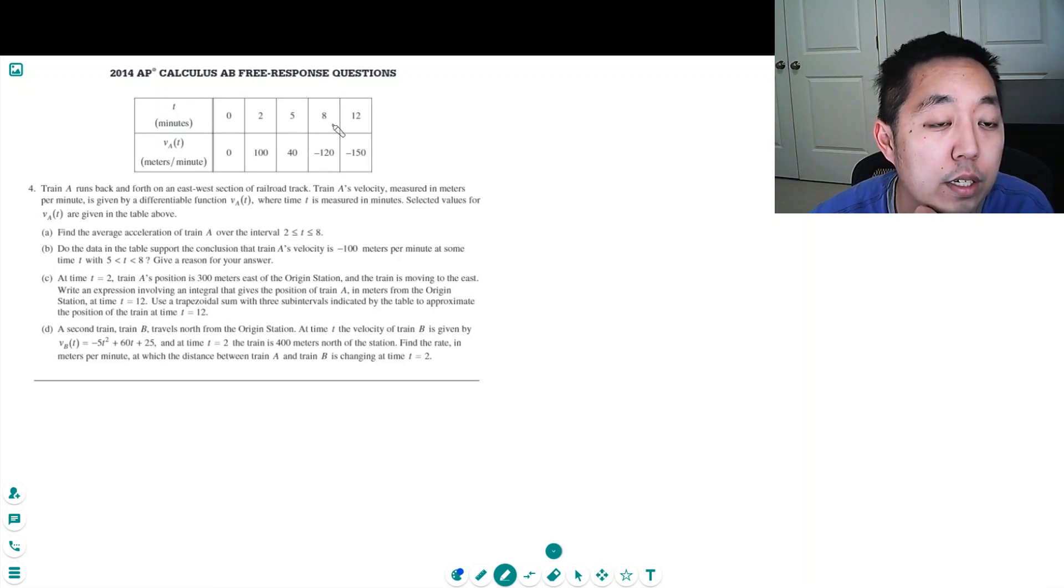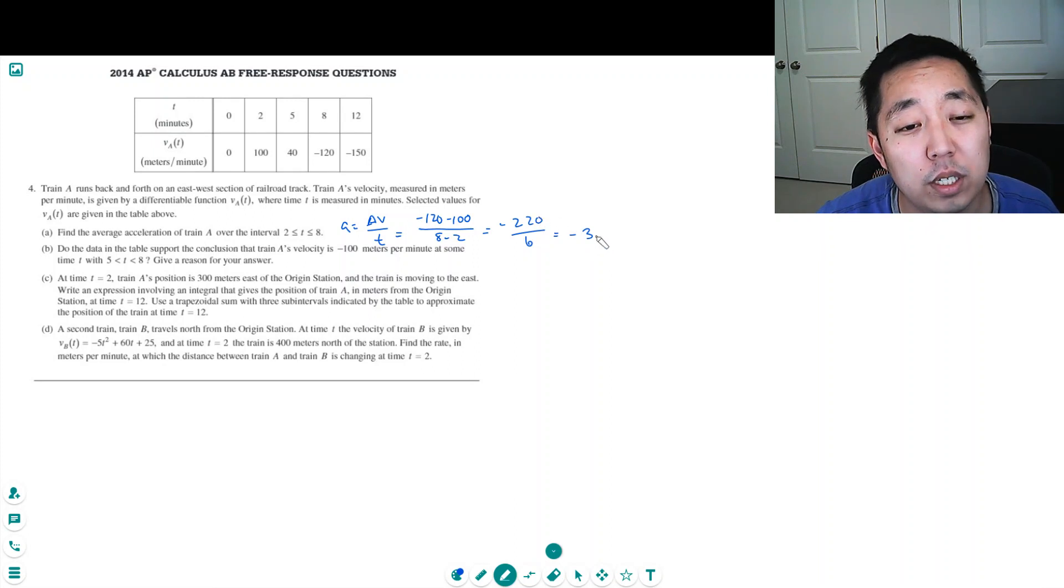Find the average acceleration over 2 to 8. So average acceleration is a secant line slope, and acceleration is the change in velocity over time. In this case, from 2 to 8, we go from minus 120 minus 100 over 8 minus 2. That's minus 220 divided by 6, and that's minus 110 over 3, which is minus 36 and 2/3 meters per minute squared.